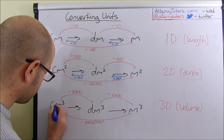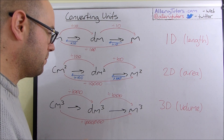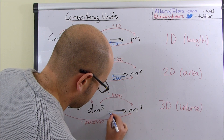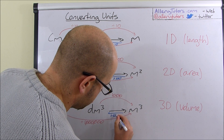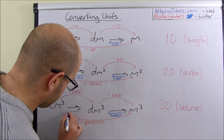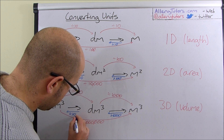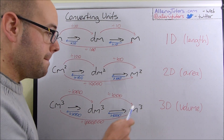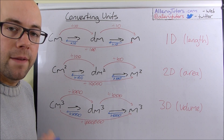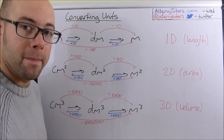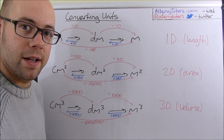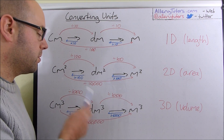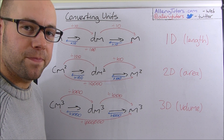Obviously going the other way is exactly the same, except this time we multiply. Going backwards, it's going to be multiplied by 1,000, and going the other step, also multiplied by 1,000. If you needed to convert metres cubed to centimetres cubed, all you do is multiply by a million and you get the right answer. That's why we divide by 1,000 going from centimetres cubed to decimetres cubed. That's it.